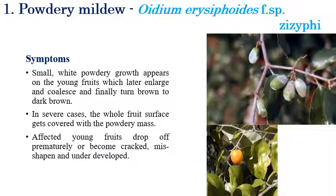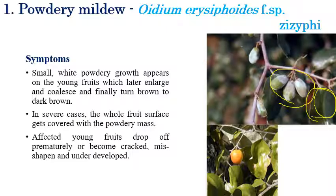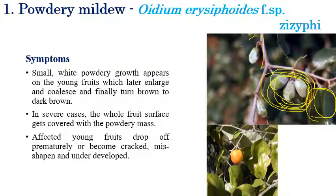The first disease, powdery mildew, is caused by Erysiphe species. The symptoms include white color powdery growth appearing on the berries as well as the leaves. In severe cases, entire berries and fruits are covered with white color dense powdery masses. In later stages, the affected fruits droop down and we can see cracking symptoms as well.